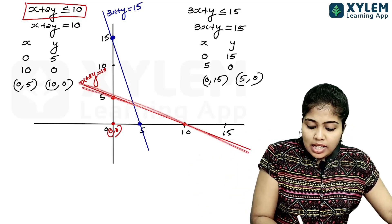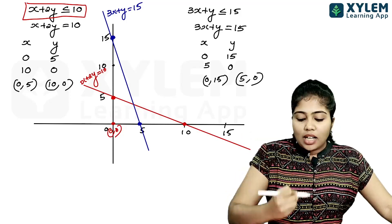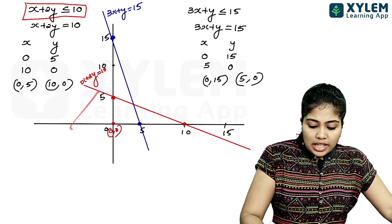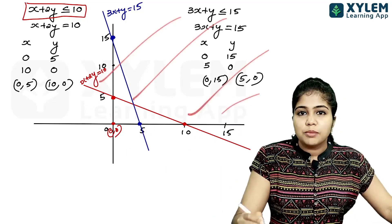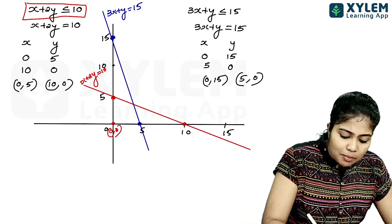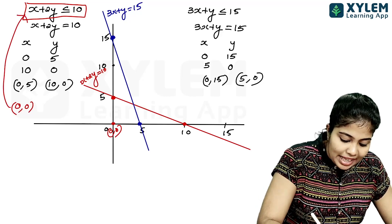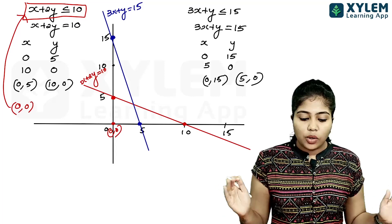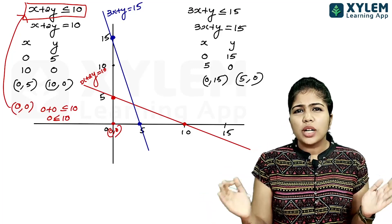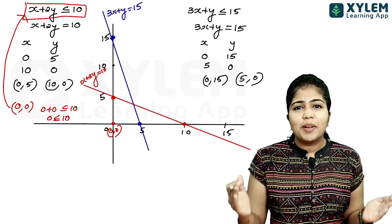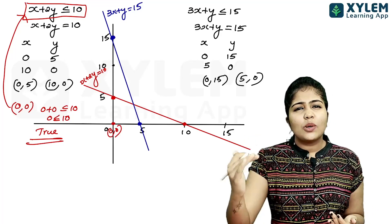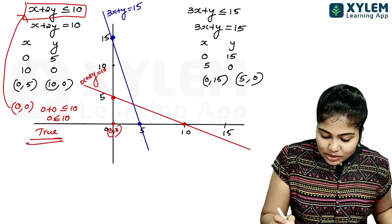We check the origin point 0, 0 against the constraints. For x plus 2y less than or equal to 10: substituting 0, 0 gives 0 less than or equal to 10, which is true. So the region containing 0, 0 is valid for this constraint.